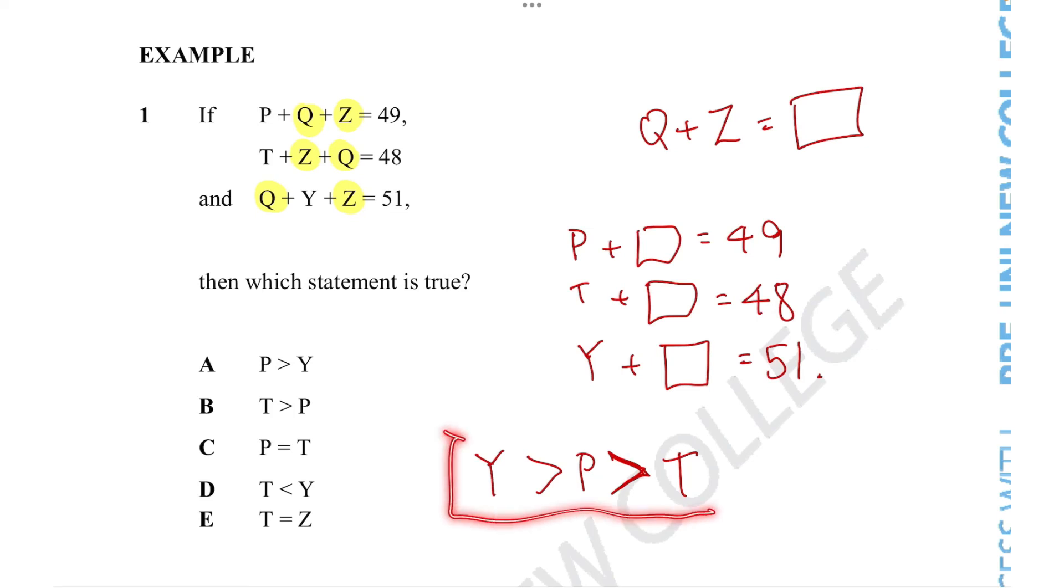We've figured out the relationship between these three letters, and that's what the question wants us to do. We can straight away cancel our answer options C and E because we know that all three numbers have to be different. Is P bigger than Y? We know that's not true. Is T bigger than P? That's not true, T is actually smaller. Finally, is T smaller than Y? It is actually much smaller than Y, so this is correct and is the only correct solution.